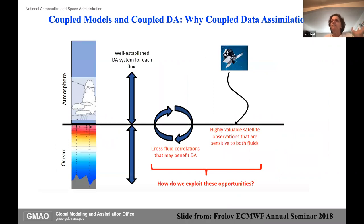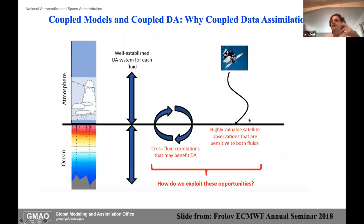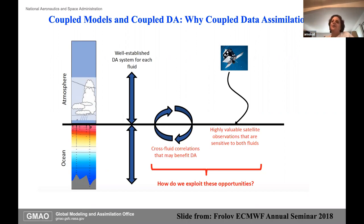Why coupled data assimilation? We have well-established systems for DA in each fluid, but we're not making the best use of satellite observations that are sensitive to both fluids. We use altimetry for the ocean DA but not so much for the atmosphere. We use scatterometers for the atmosphere but not so much for the ocean. The idea is that if we were doing this coupled, we could really make better use of the data.